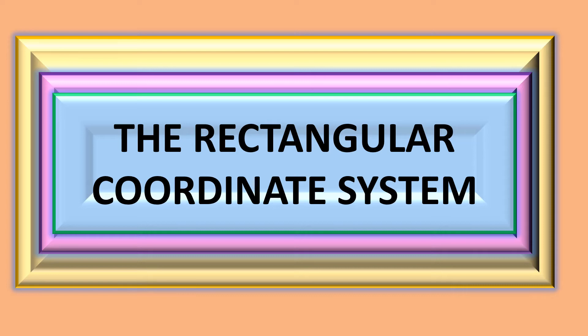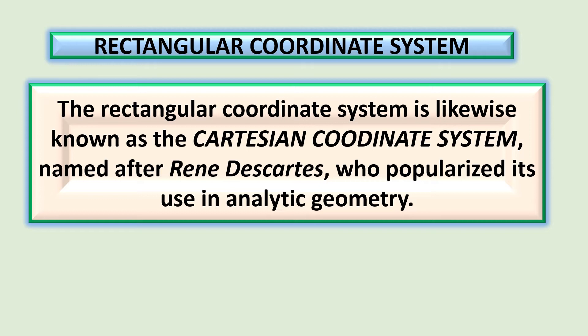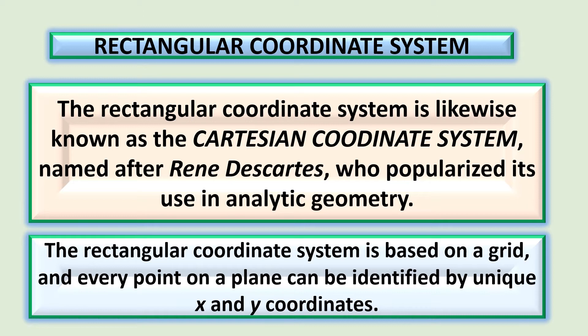Welcome back to our YouTube channel. This time I'm going to discuss the rectangular coordinate system. The rectangular coordinate system is likewise known as the Cartesian coordinate system, named after René Descartes who popularized its use in analytic geometry. The rectangular coordinate system is based on a grid and every point on a plane can be identified by unique x and y coordinates.